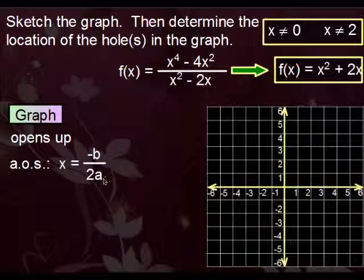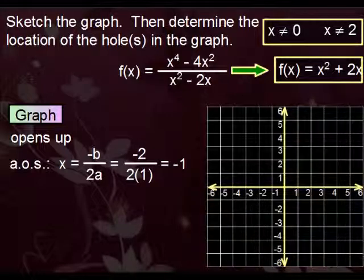b being 2, a being the leading coefficient, 1. Plug in those values and we get negative 1. Which means that this parabola gets cut in half by the line x equals negative 1.